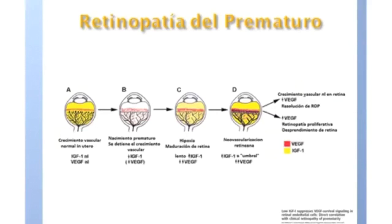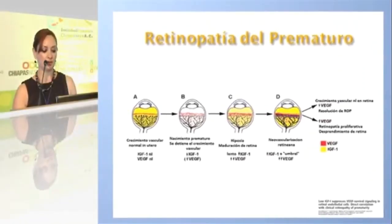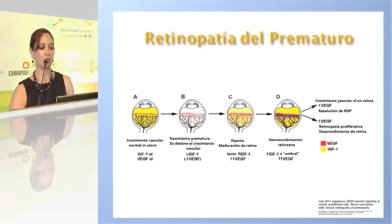This hypoxia is the principal modulatory mechanism that stimulates VEGF and causes disorganized proliferation of vessels. There are two pathways: if VEGF is regulated, there will be resolution of the retinopathy; but if these mechanisms are not controlled, there is an increase in VEGF, establishing the proliferative phase of retinopathy.